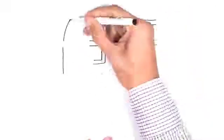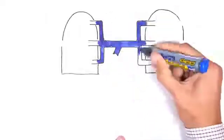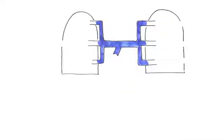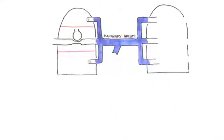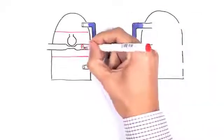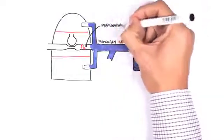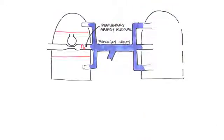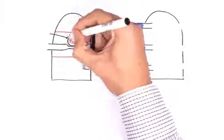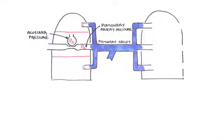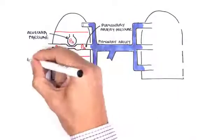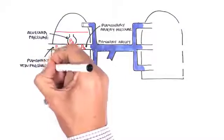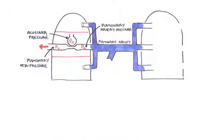If the concept of differing ventilation and perfusion is still confusing, let's introduce pressures. You have two lungs, each divided into three zones. The pulmonary artery brings blood to the lungs — pulmonary artery pressure (Pa) brings blood to the alveoli. The alveoli have their own pressure, also represented as Pa. Gas exchange occurs between the pulmonary vessels and the alveoli, and then the pulmonary vein returns newly oxygenated blood to the heart. Pulmonary vein pressure is represented by Pv.